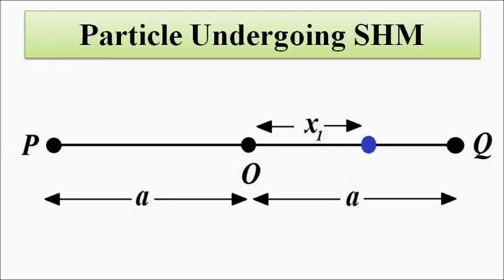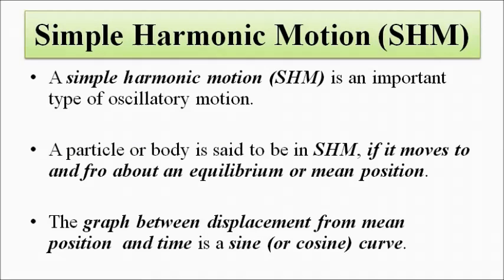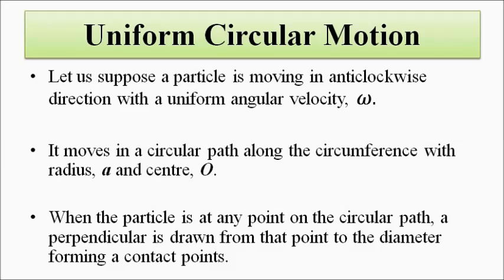The displacement versus time graph of SHM, which we covered in the SHM basics video, is represented with a sine graph — a sinusoidal function. Now we have to analyze this simple harmonic motion in terms of uniform circular motion.